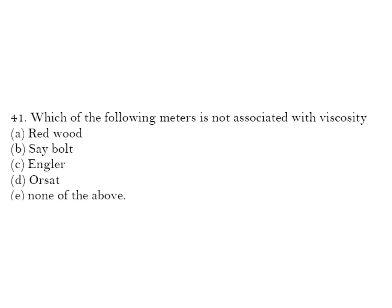Which of the following meters is not associated with viscosity? For viscosity we use Redwood viscometer, Saybolt viscometer, and Engler — all three are correct. The one not associated is the Orsat apparatus, which is used for flue gas analysis — measuring mole fractions of CO2, carbon monoxide, and O2 in power plants. So D is the correct answer.